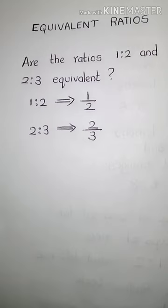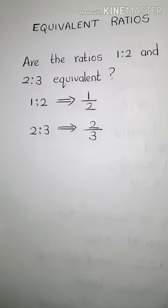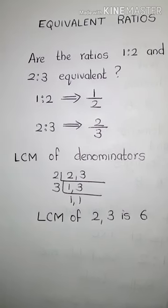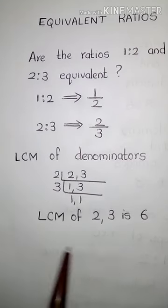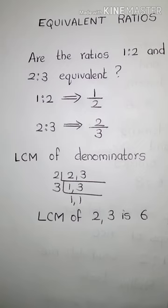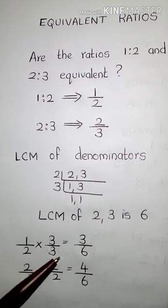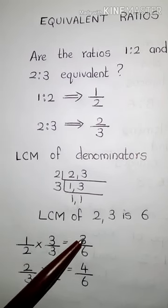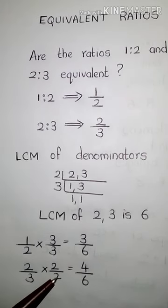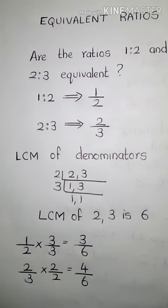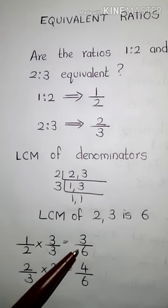The fractions 1/2 and 2/3 are unlike fractions — their denominators are different. To compare them, first find the LCM of the denominators. LCM of 2 and 3 is 6. Convert to like fractions: 1/2 × 3/3 = 3/6, and 2/3 × 2/2 = 4/6. Now compare the numerators: 3 and 4.